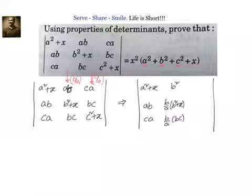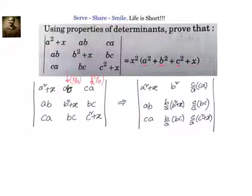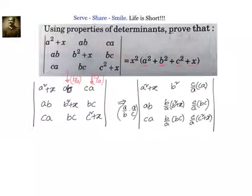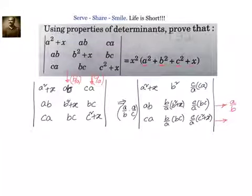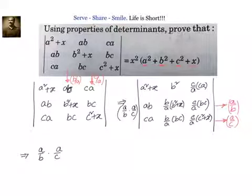In the third column we will have c/a into ca, then c/a into bc, and c/a into c squared plus x. Since we multiplied the second and third columns by b/a and c/a, we take a/b and a/c outside. Now we multiply the second row by a/b and the third row by a/c, so those factors cancel with the ones already taken outside, leaving nothing outside.